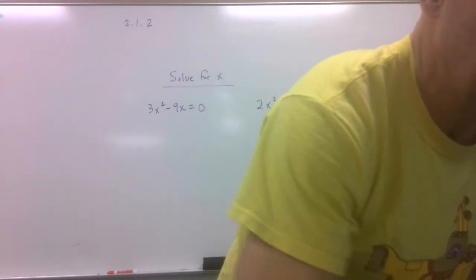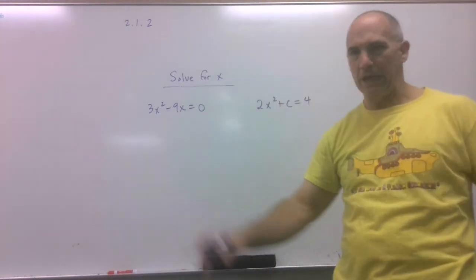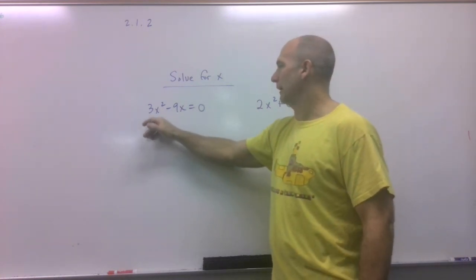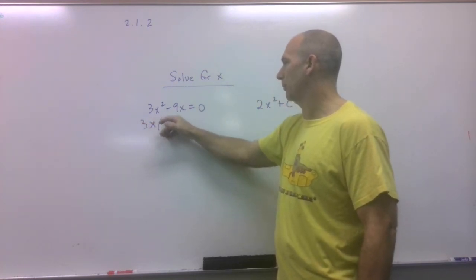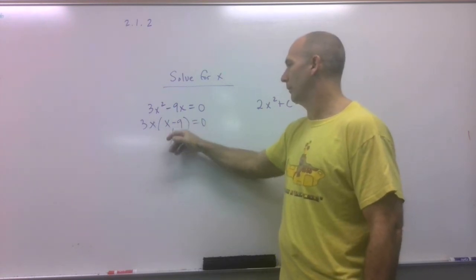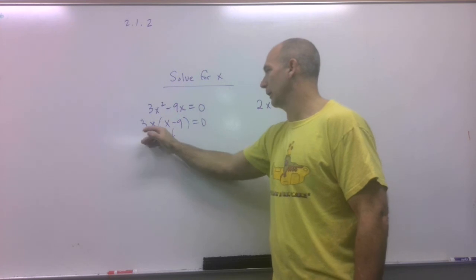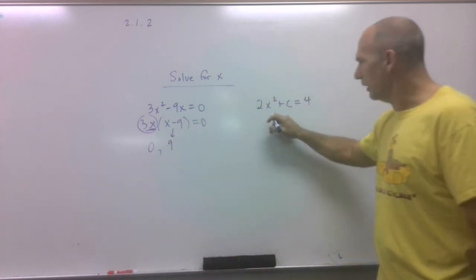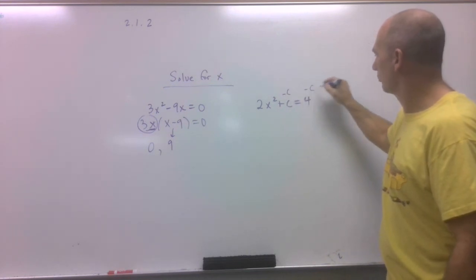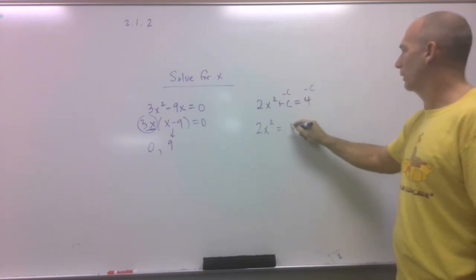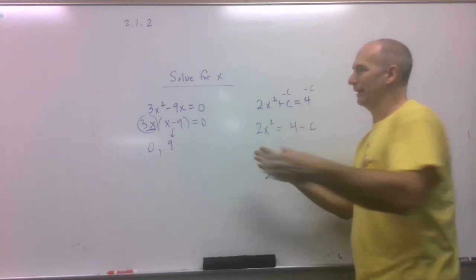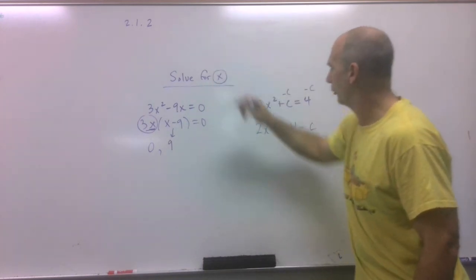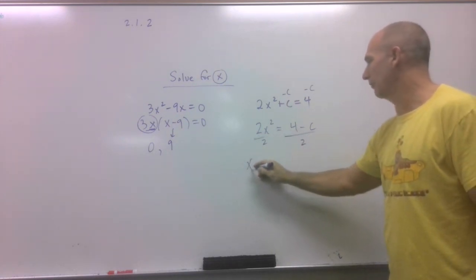Here are some basic algebra reminders. For factoring and solving: take out a 3x, giving 3x times (x minus 3) minus 9 equals zero - then find what makes it zero. For a slightly different problem in abstract algebra, solve for x by subtracting c: 2x squared equals 4 minus c. This isn't as neat - you're just getting x alone. Divide both sides by 2 and you get x squared equals all of that expression.